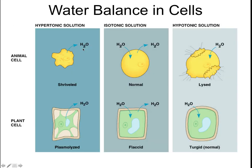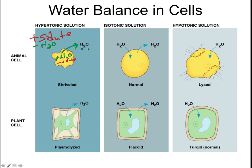This happens all the time in cells. If we have a cell in a hypertonic solution, that means there are lots of solute and little water on the outside. So the cell has more water and less solute. If the solute's too big to come in, that means water has to go out. When water goes out, the cell shrivels — not good for the cell. It dies.